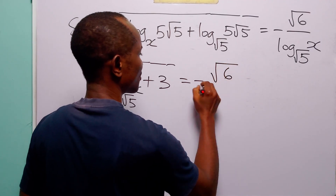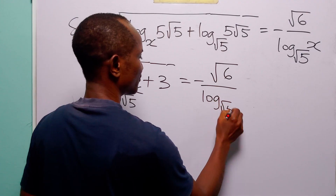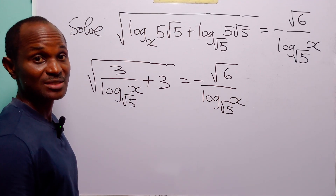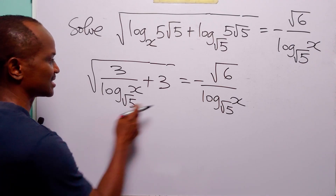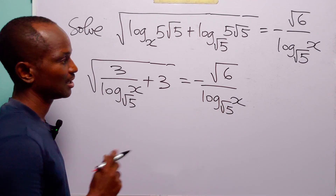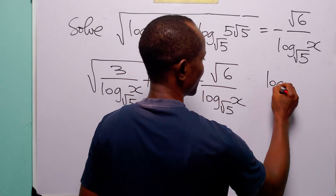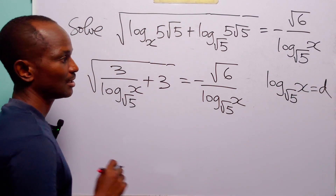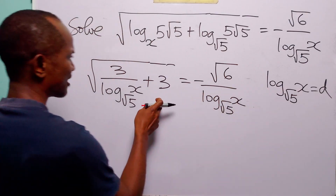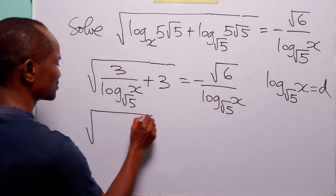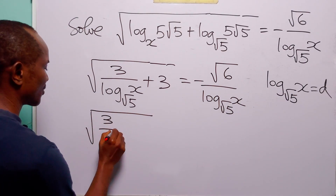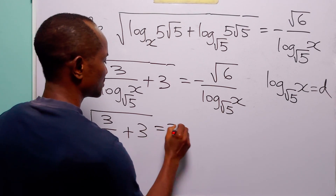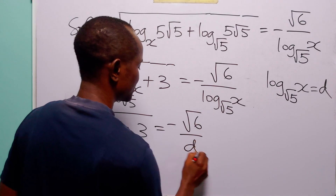...is equal to minus root 6 over log to base root 5 of x. At this point, we need to do a substitution since we have this repeated expression. So let log to base root 5 of x be equal to the letter d. With this substitution, we can rewrite this equation as the square root of 3 over d plus 3 is equal to minus root 6 over d.